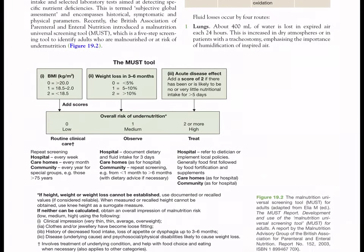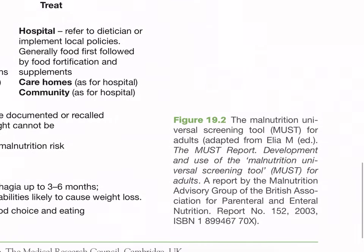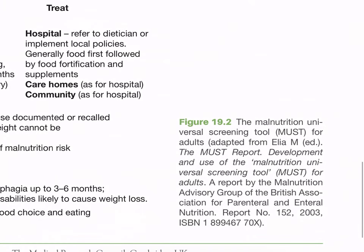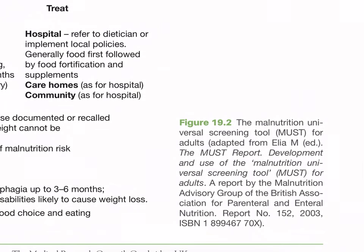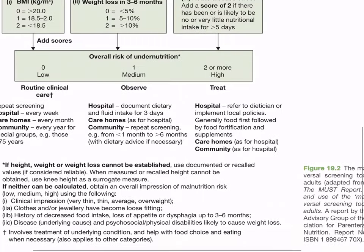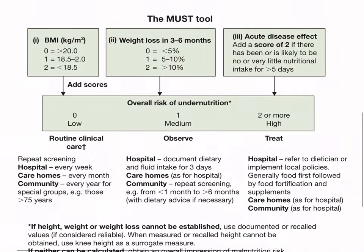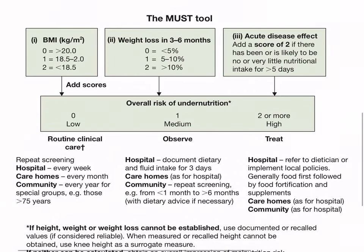Figure 19.2 shows the Malnutrition Universal Screening Tool (MUST) for adults, a report developed by the Malnutrition Advisory Group of the British Association for Parenteral and Enteral Nutrition. The MUST tool assesses overall risk of undernutrition as low (score 0), medium (score 1), or high (score 2 or more). For low risk: routine clinical care. For medium risk: observe. For high risk: treat.